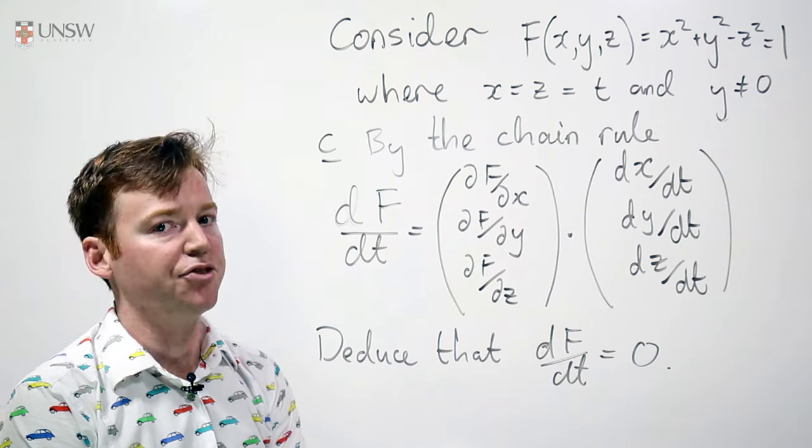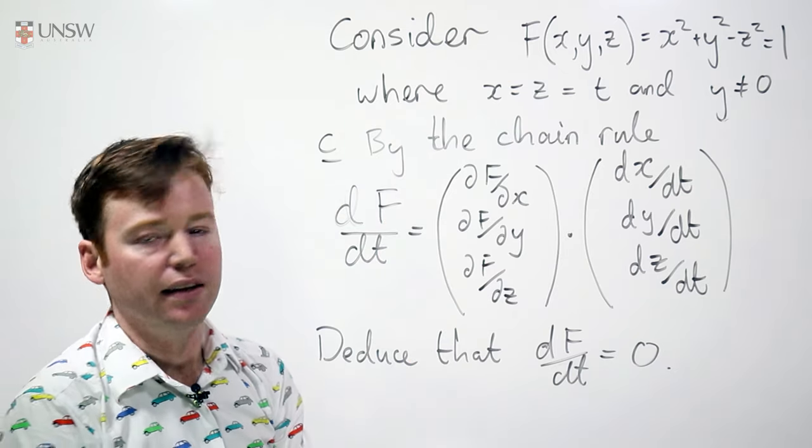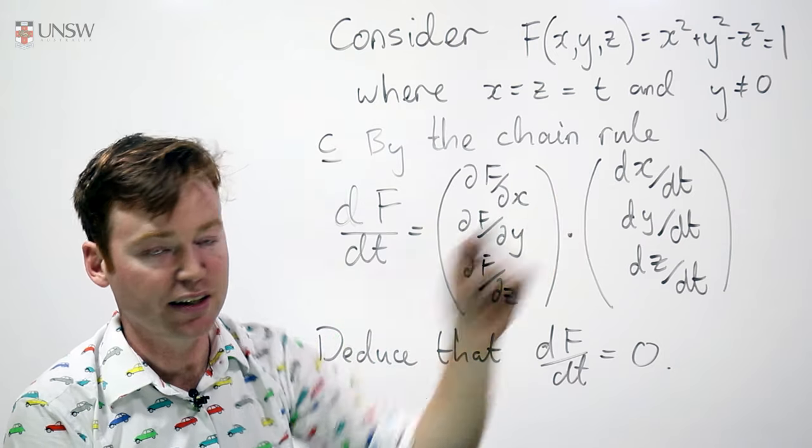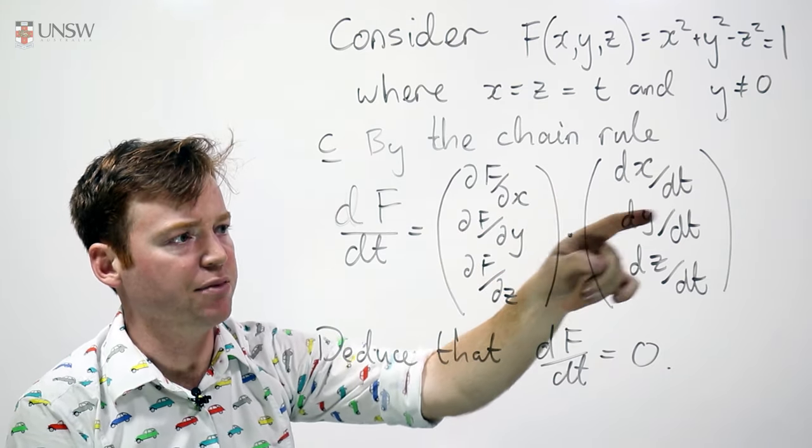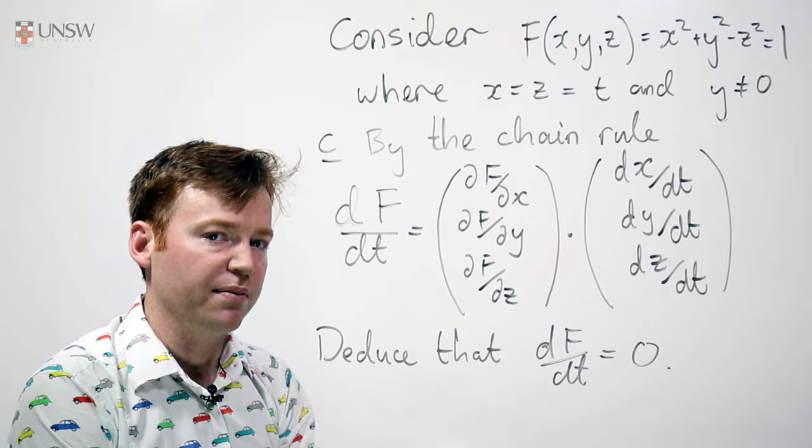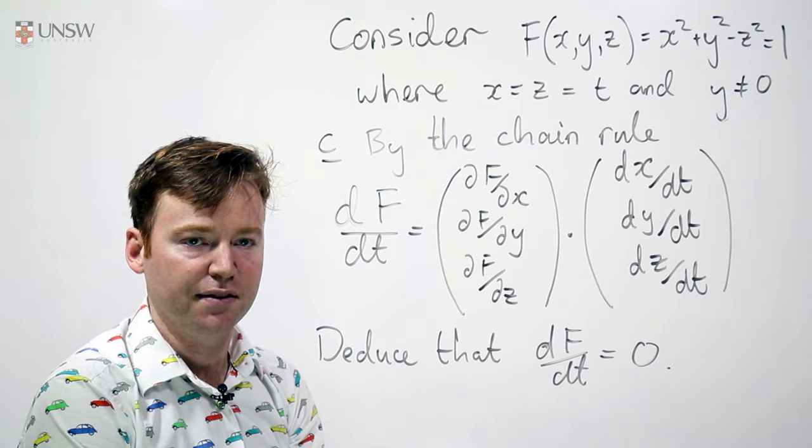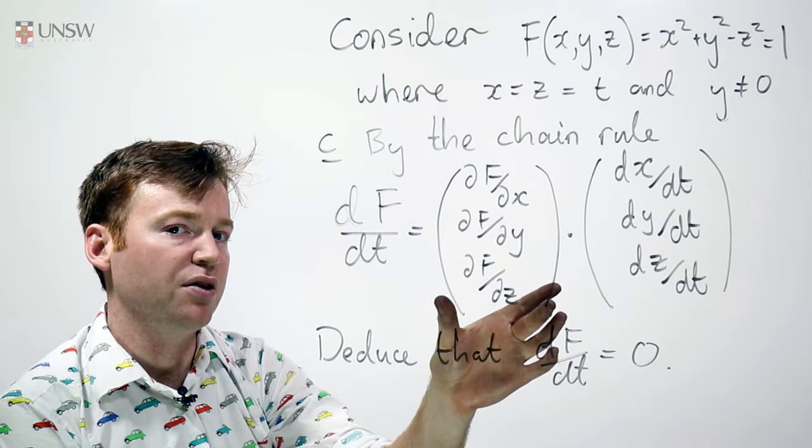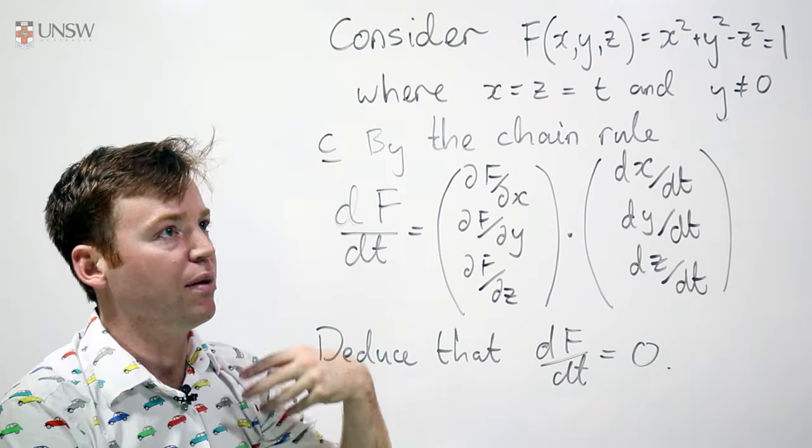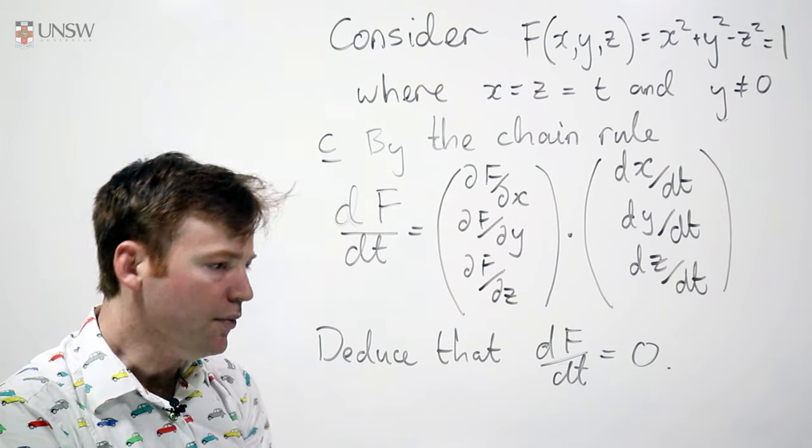So now in part c we see the chain rule coming into play. By the chain rule, df/dt is this. It's the partial derivative of f with respect to one of its variables times dx/dt plus df/dy times dy/dt plus df/dz times dz/dt. But I've written it in this particular way because I'm going somewhere, geometrically this actually means something. So let's leave it as the dot product of two vectors. This one we've seen before is the normal vector. This one is the direction that we're traversing the curve in. So remember we're parametrizing this curve, we're actually moving it along a line and this is the direction of that line.